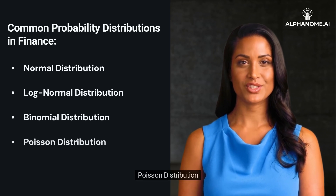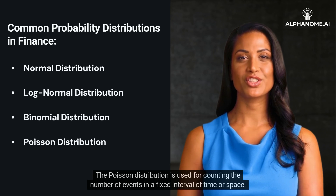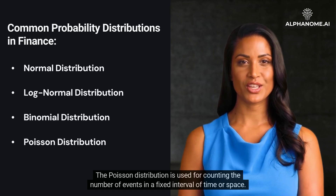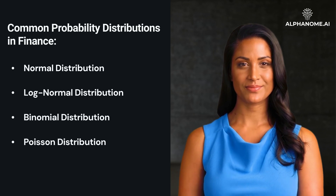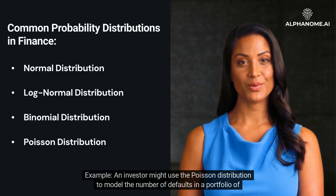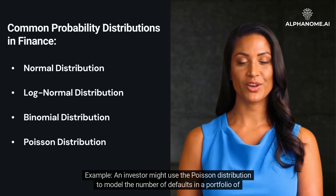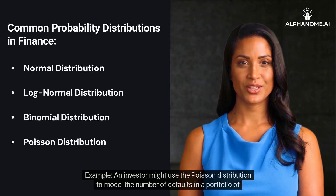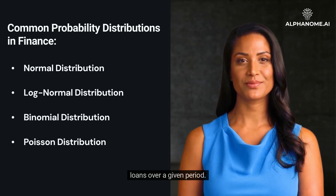Poisson Distribution: the Poisson Distribution is used for counting the number of events in a fixed interval of time or space. For example, an investor might use the Poisson Distribution to model the number of defaults in a portfolio of loans over a given period.